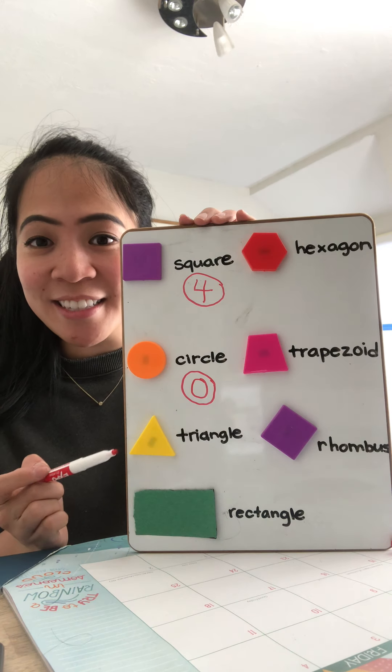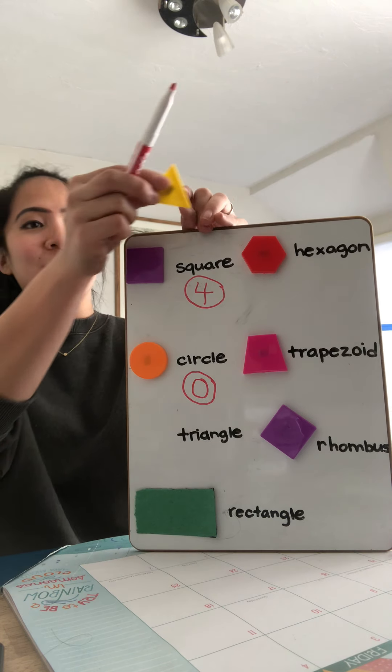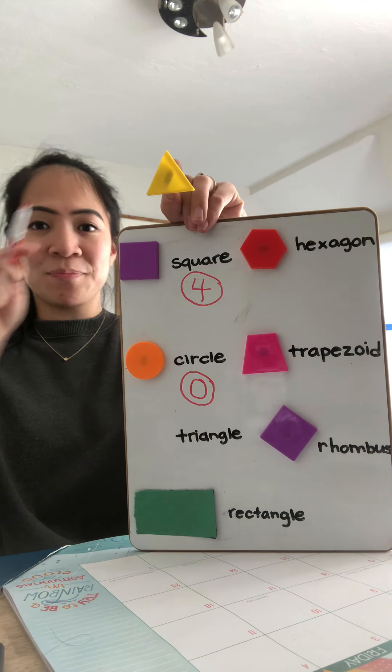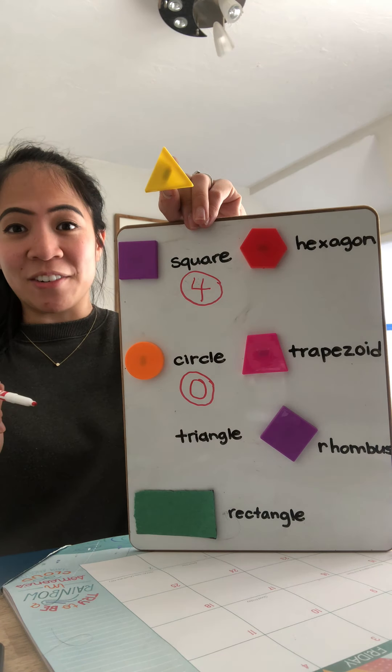The next shape is triangle. Can you guys count how many sides a triangle has? Ready? One, two, three. Very good.